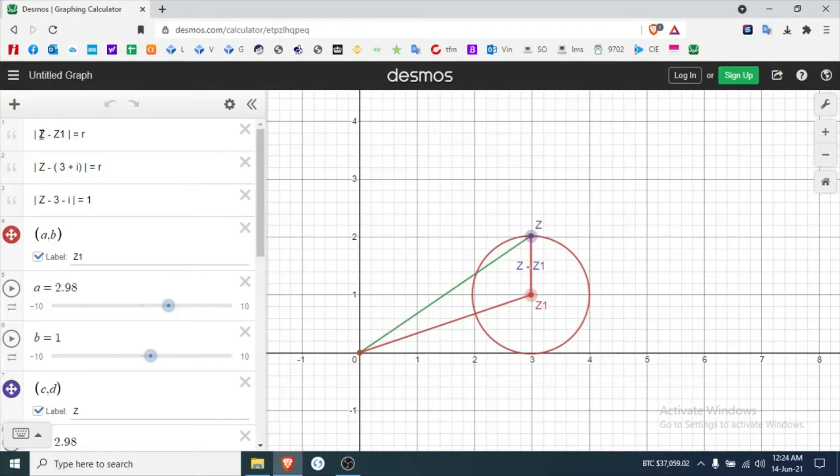Okay, so that's that bit there, the magnitude of this vector. So in this case z1 is a complex number, it's 3 plus i. Now I can substitute that in for z1, and z minus 3 plus i in brackets.